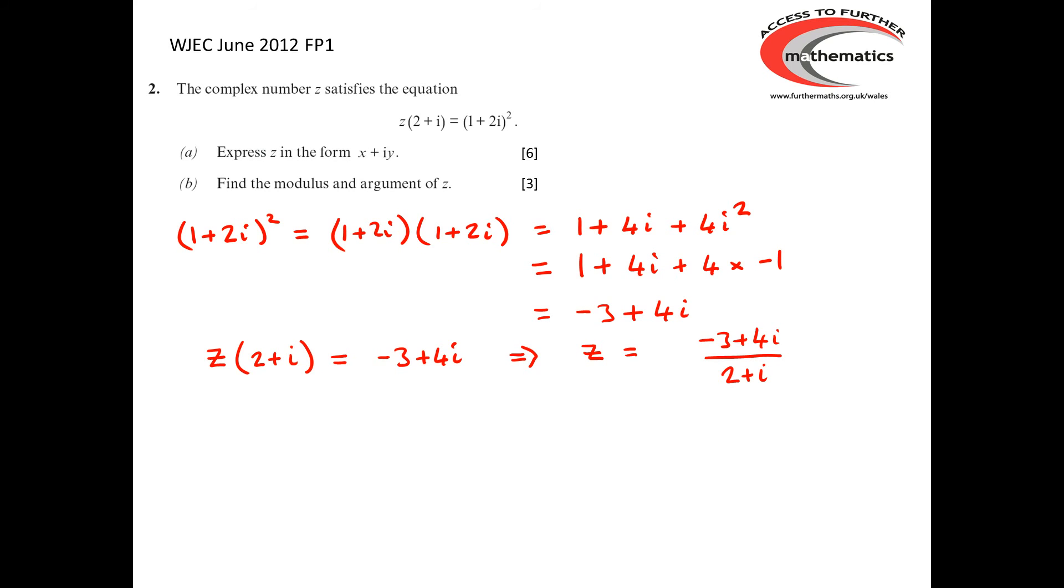We know that to divide a complex number by another complex number, we must multiply the top and the bottom of the fraction by the complex conjugate of the denominator. So, we've got to work out (-3 + 4i) times (2 - i) divided by (2 + i) times (2 - i).